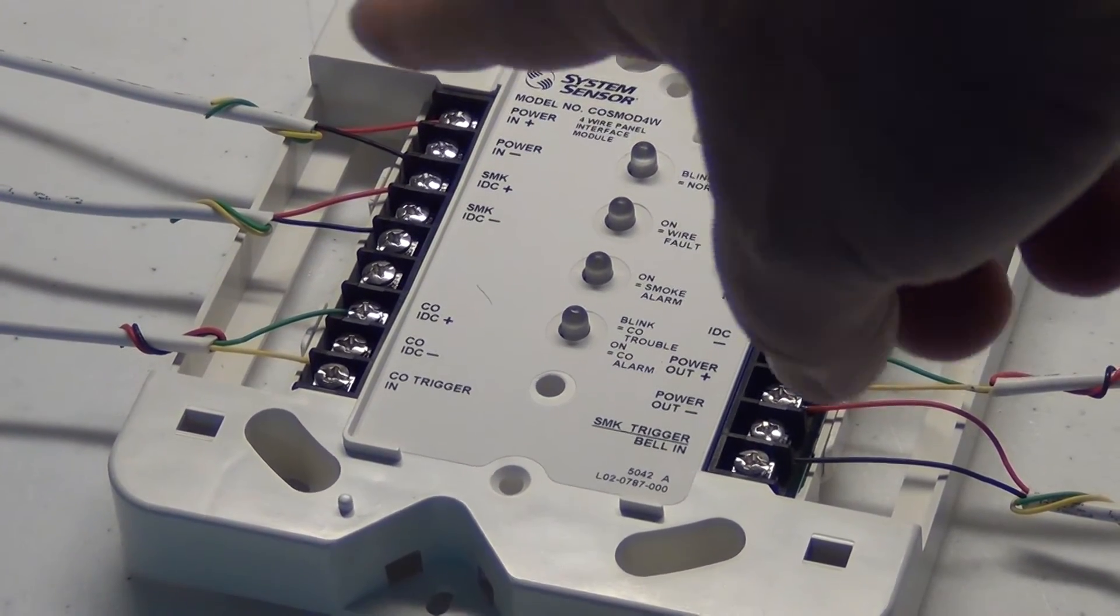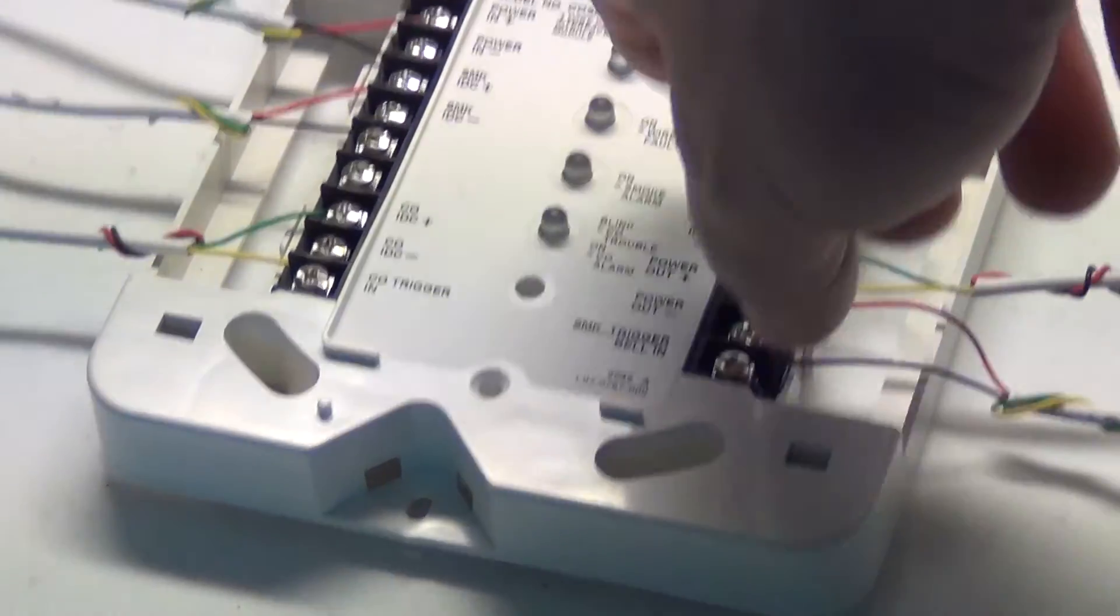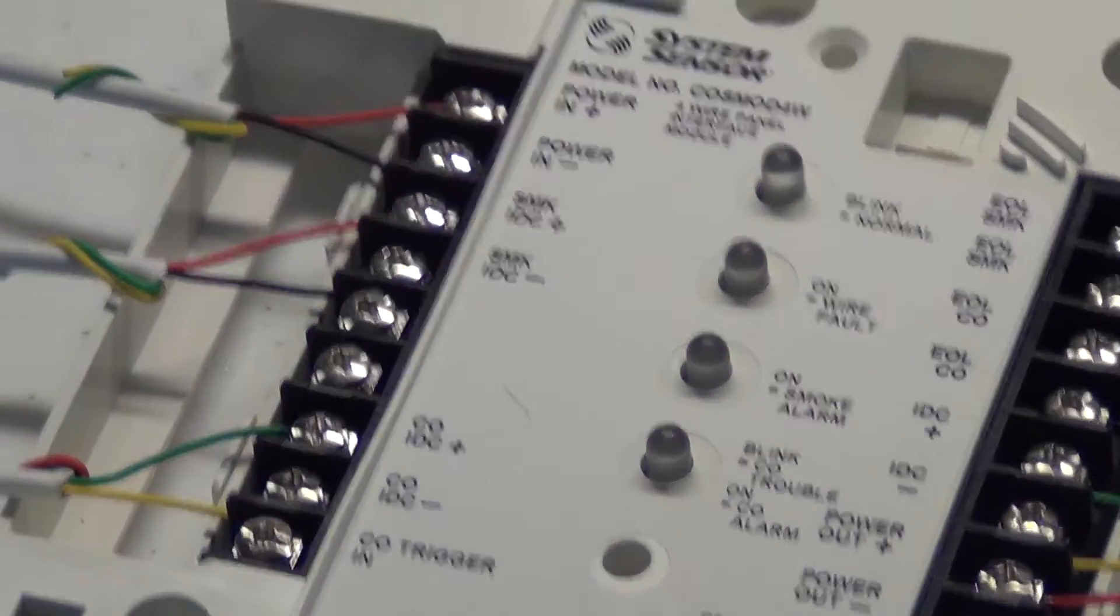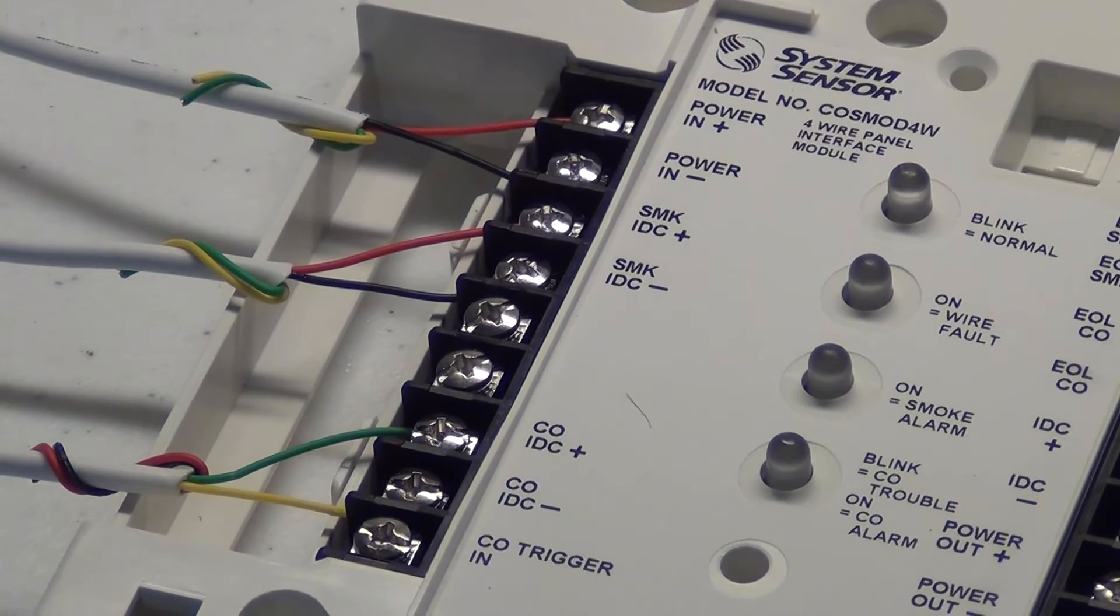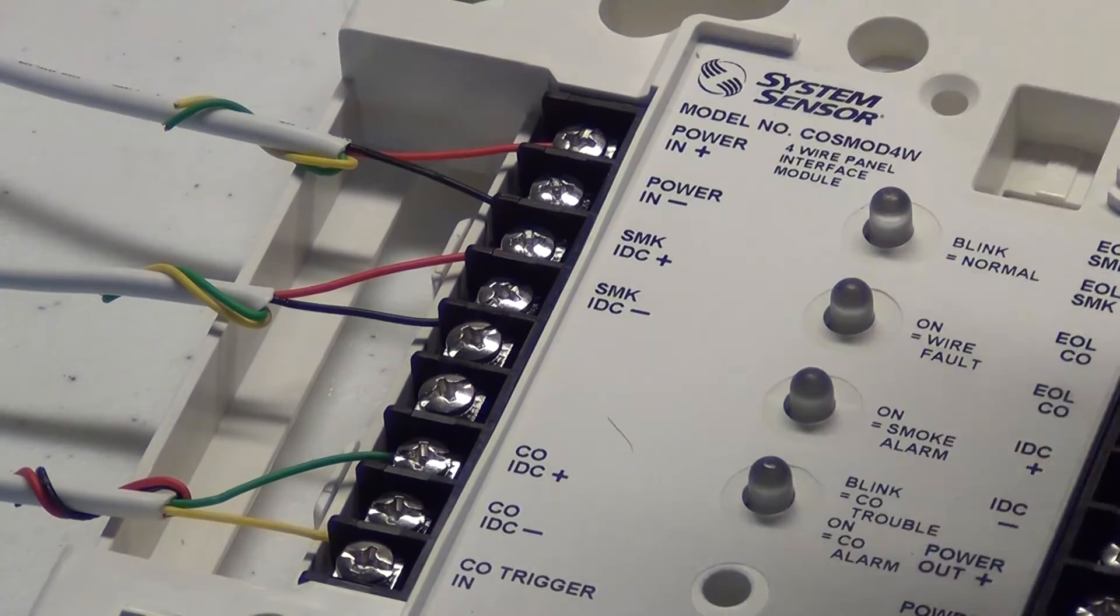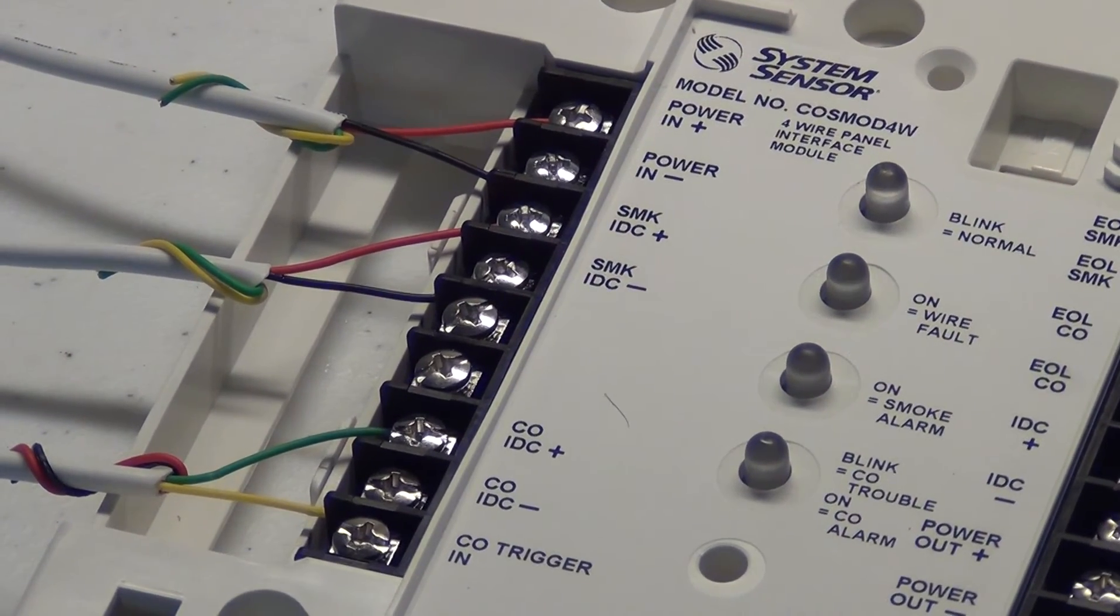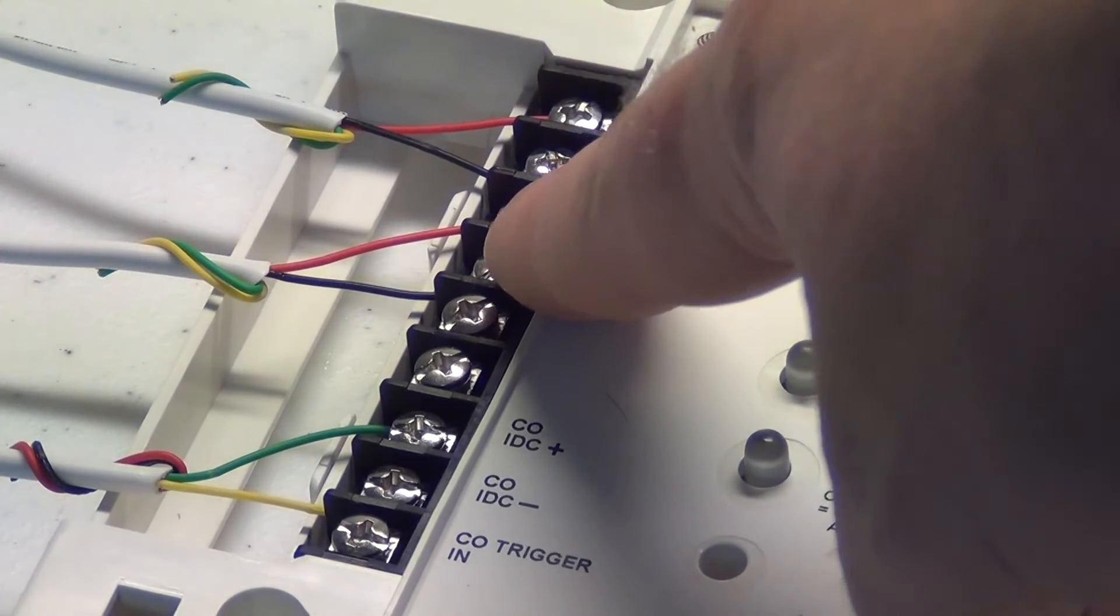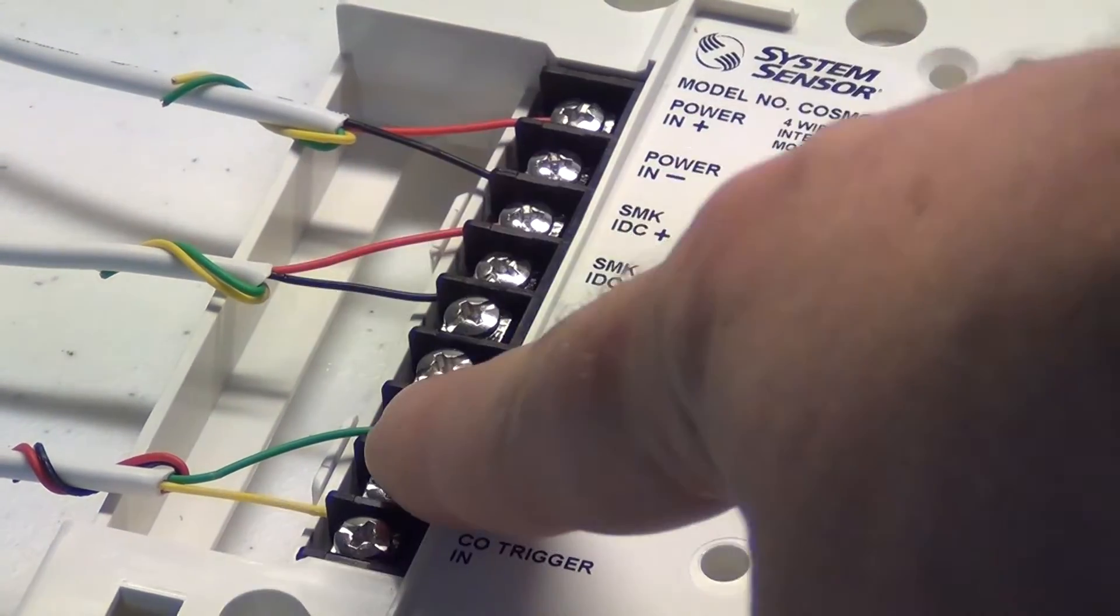The terminal strip on the left here you see we got the wires attached in and I'm going to get you a little closer here. What you'll see here is the two power wires for your smoke and CO combo units. You'll have your smoke data wires here and your CO data wires here.